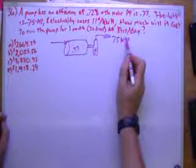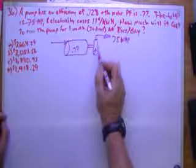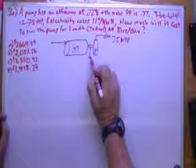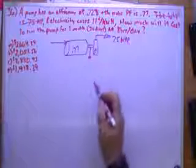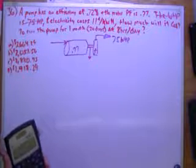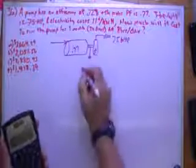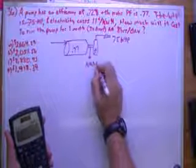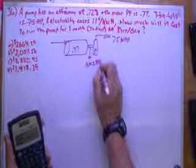So I have 75 horsepower coming out. I'm 72% efficient, so brake horsepower is going to be more than 75. So 75 divided by 0.72 is going to give me 104.16 or 104.2 horsepower. BHP would be good enough.